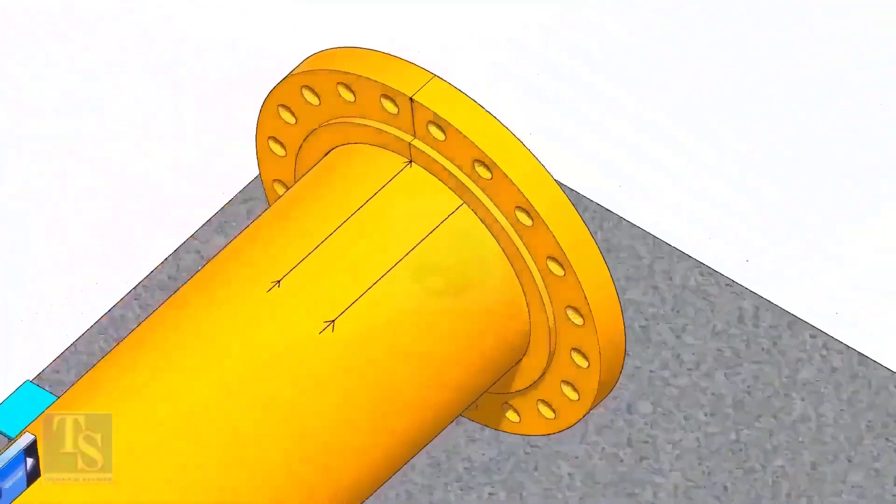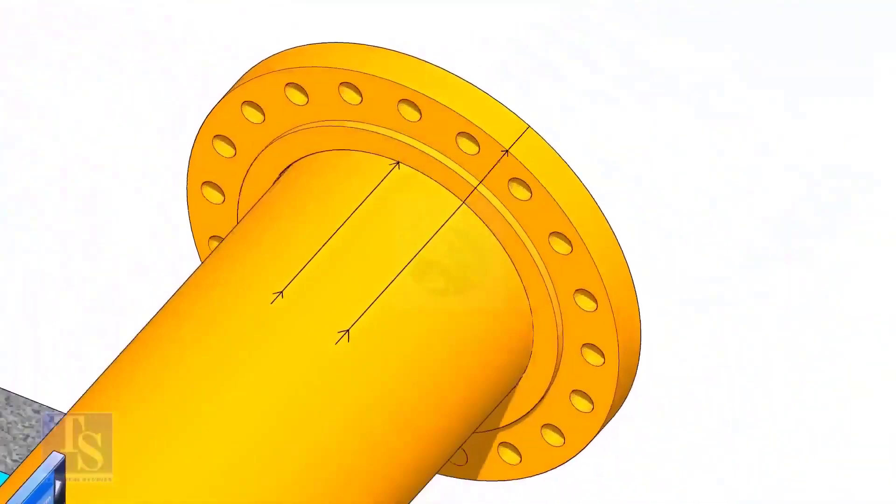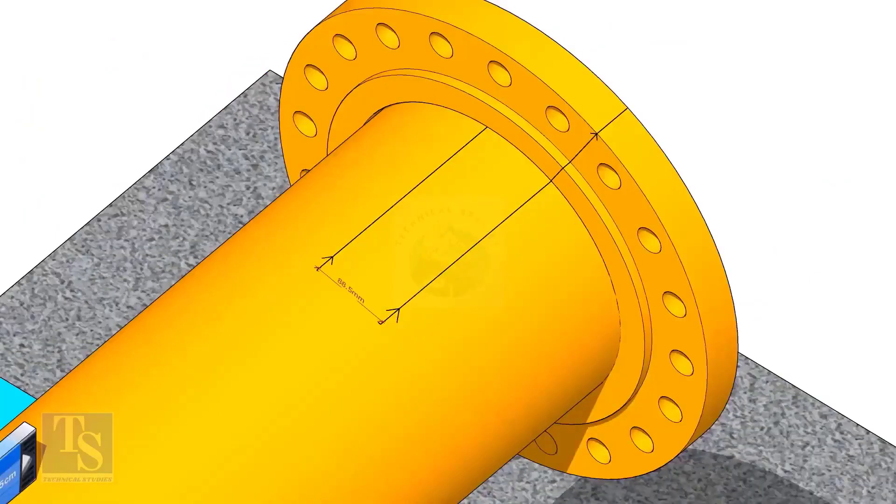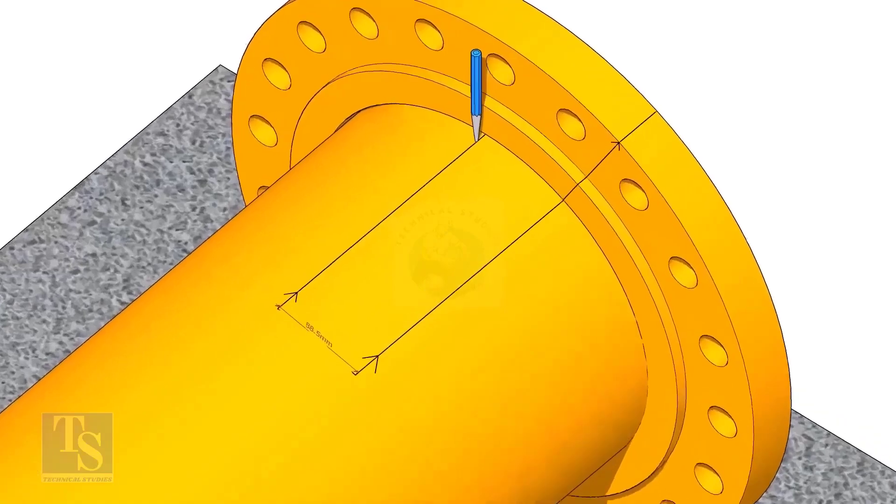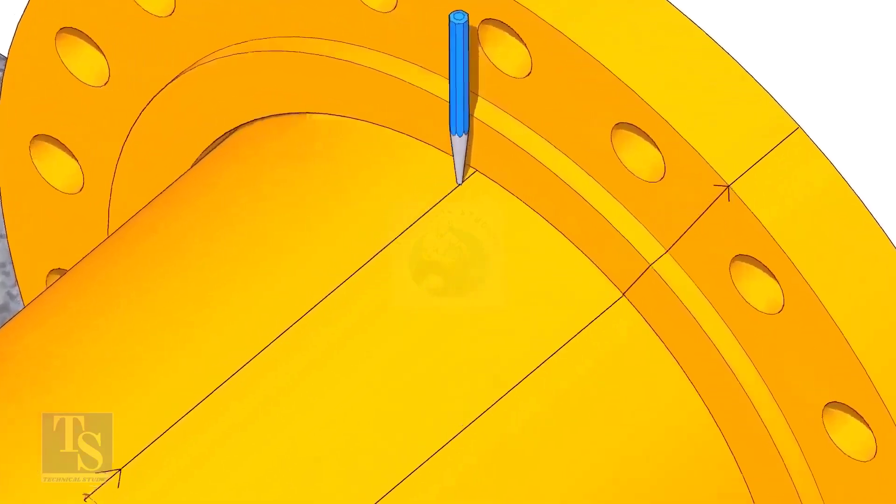Put the flange on the pipe. Rotate the flange until the center line on the flange and the 25 degree line on the pipe comes in a line. Don't forget to punch mark the center lines.